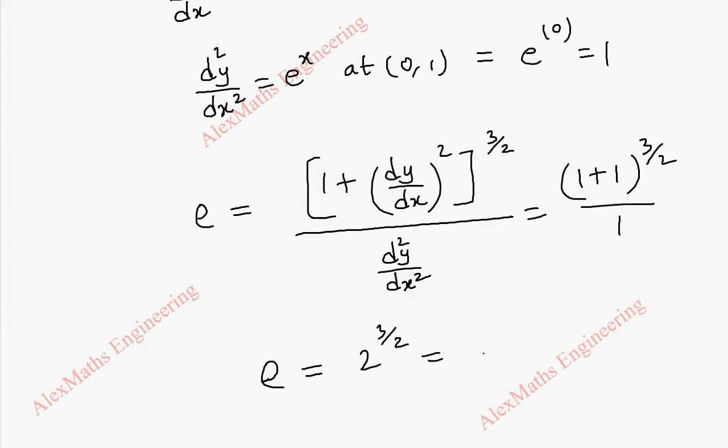This can be written as 2 to the power 1 times 2 to the power 1/2. So, this equals 2 times the square root of 2, or 2√2.